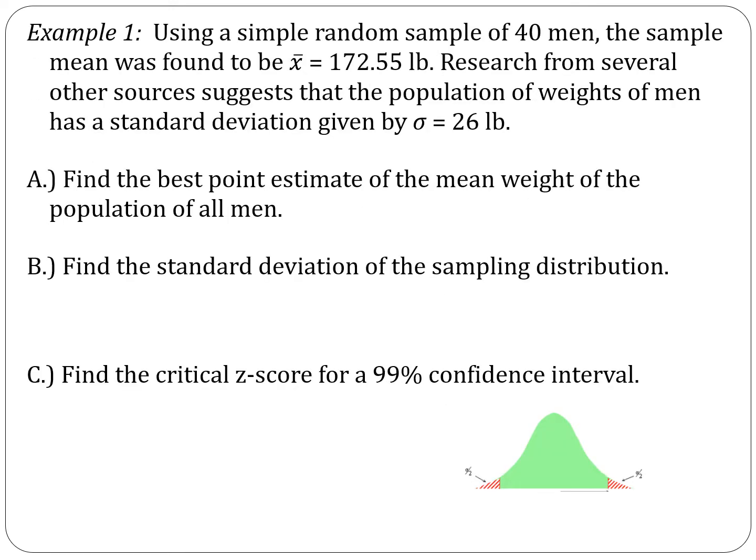Part A: find the best point estimate for the mean weight for the population of all men. Knowing nothing else about the population, our best point estimate is whatever the sample result was, and in this case the sample result was 172.55 pounds.